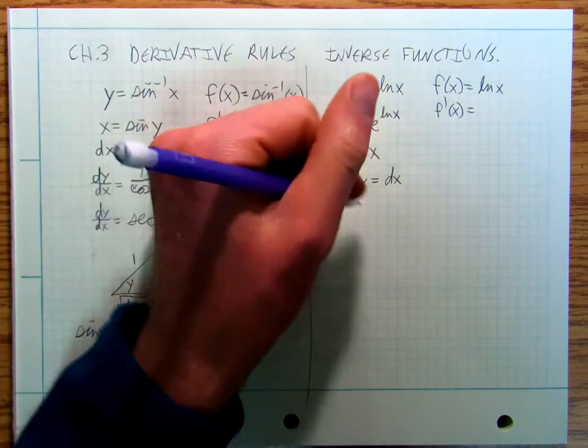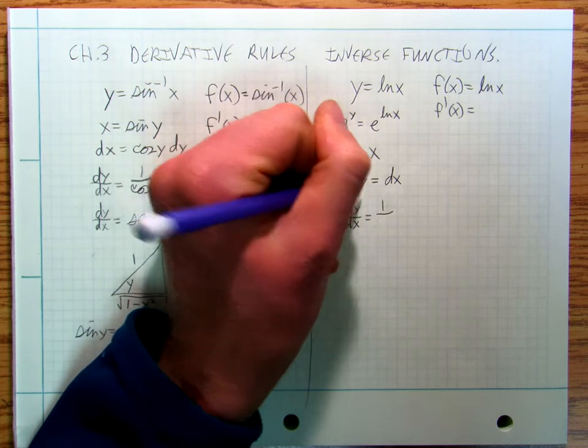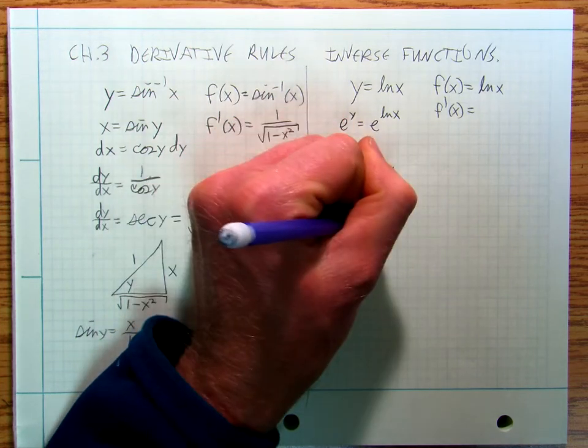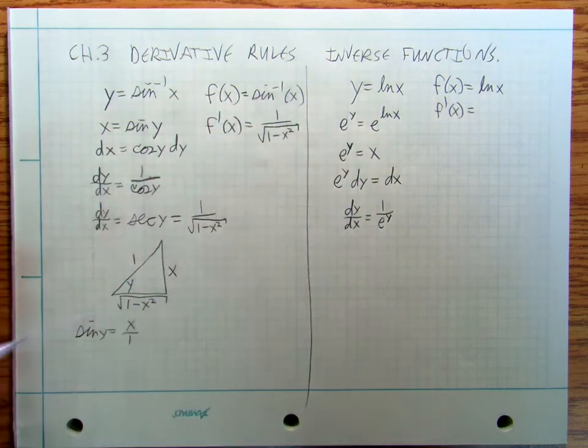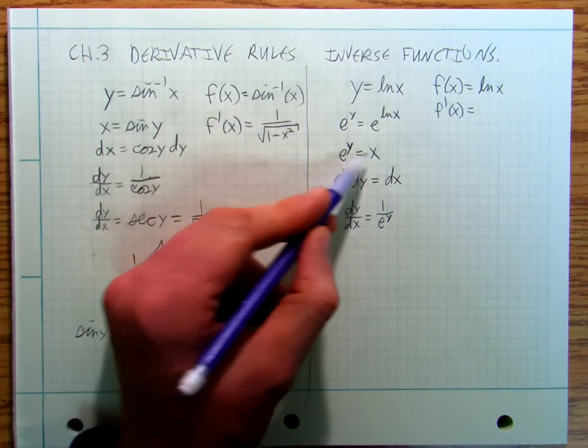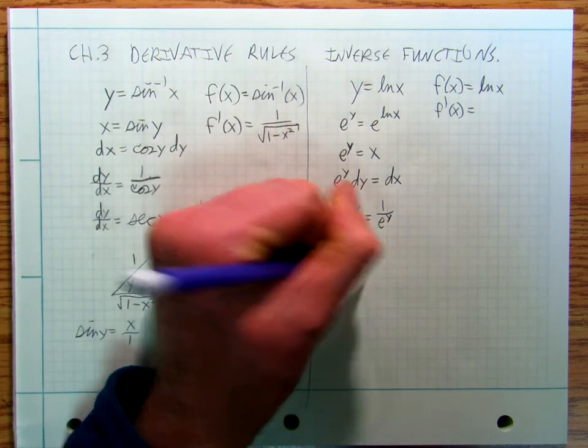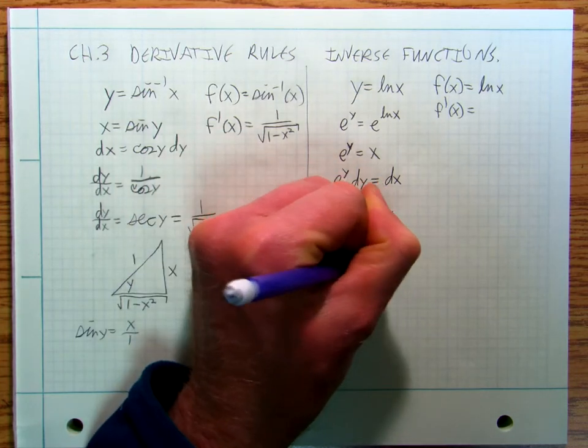So then I've got dy dx is equal to 1 over e to the y. Well, I just said right up here that e to the y is equal to x. So that means that dy dx is equal to 1 over x.